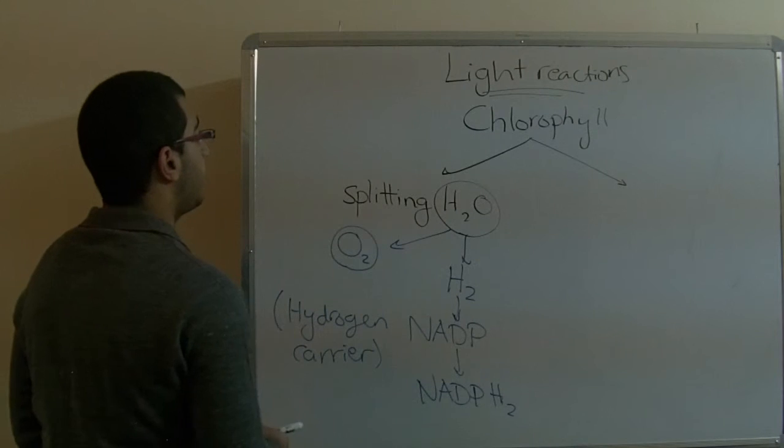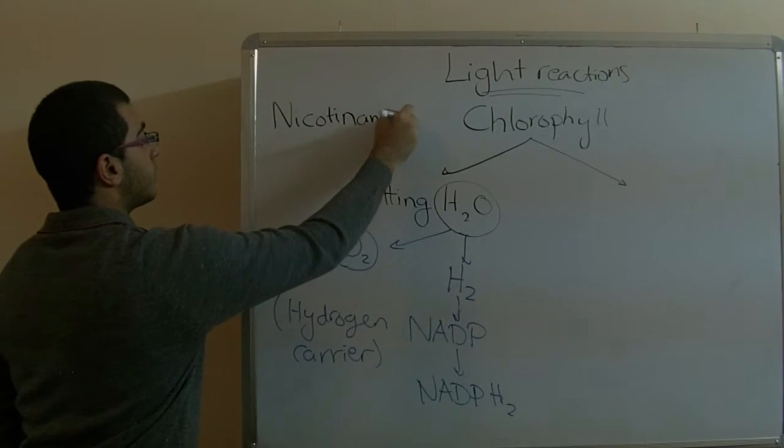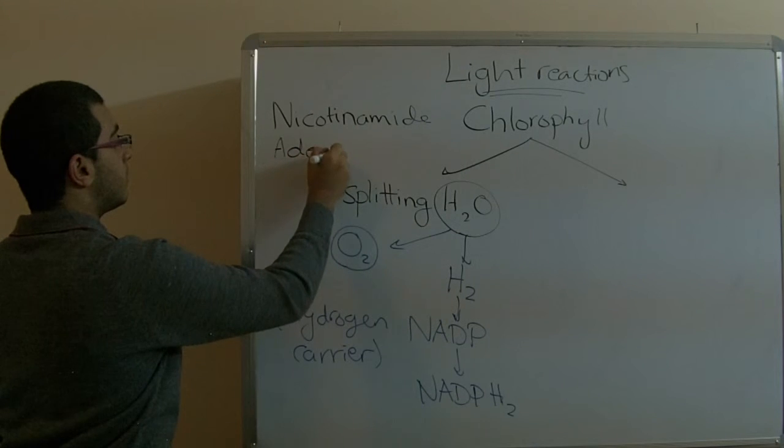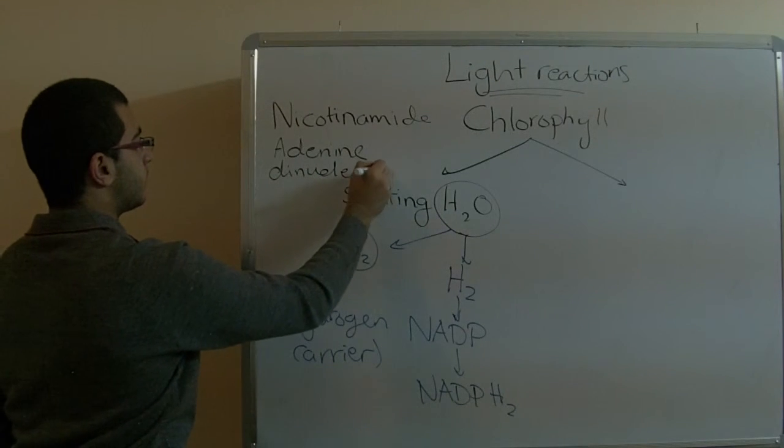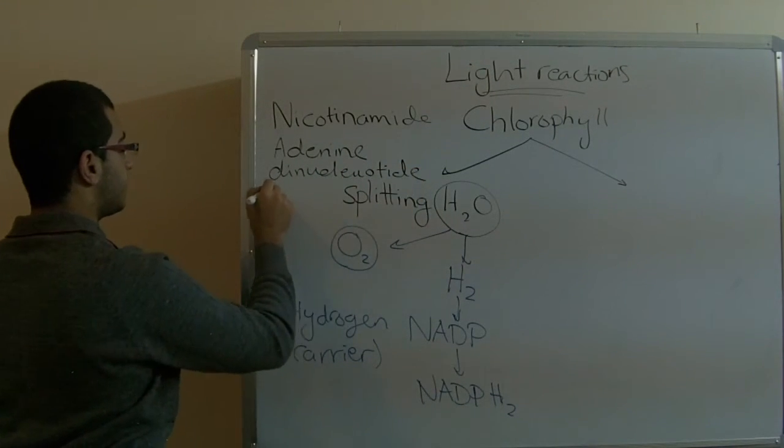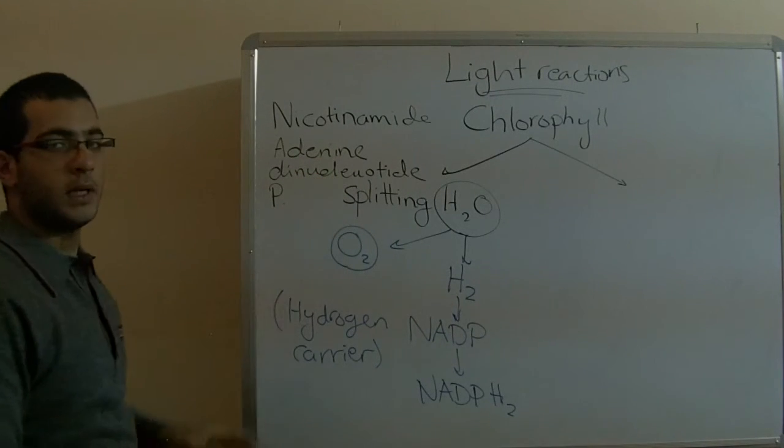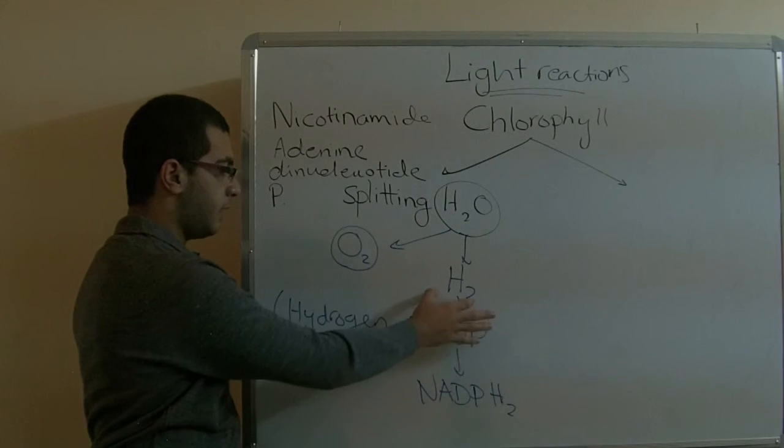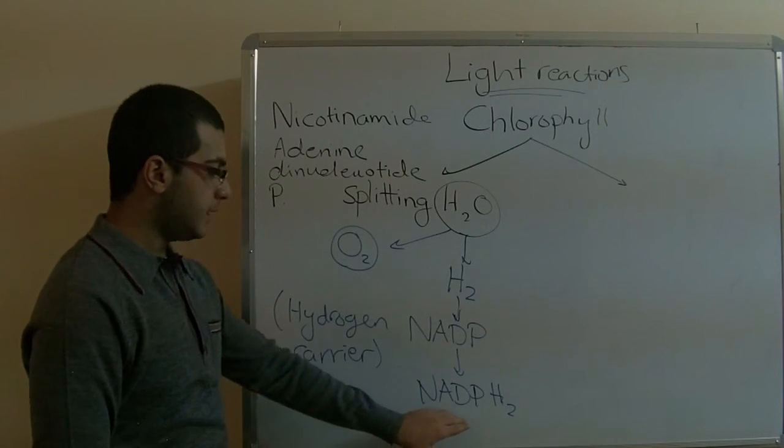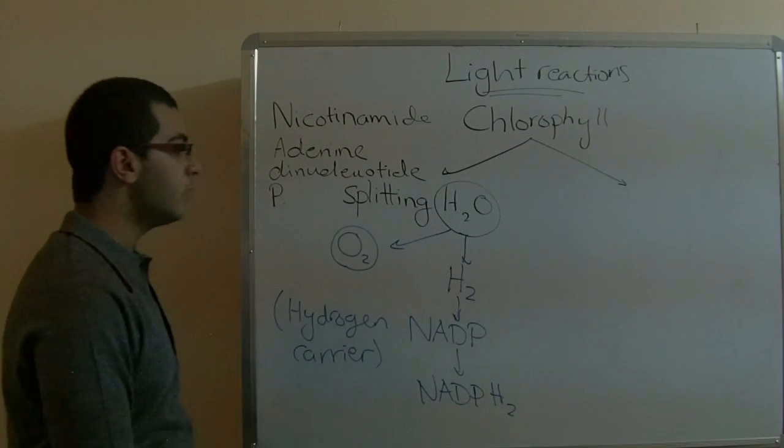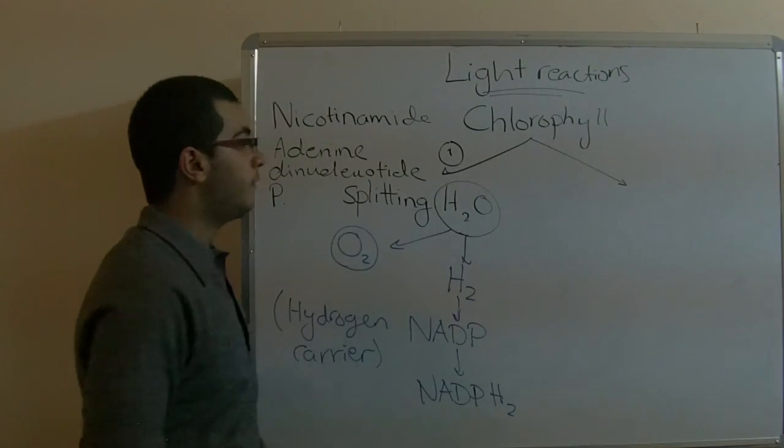NADP is an abbreviation for nicotinamide adenine dinucleotide phosphate. It's a long name. This hydrogen carrier carries the hydrogen to prevent it from combining once more with the oxygen, forming NADPH2 in order to be used in the dark reactions. This was the first part of the energy that the chlorophyll uses.